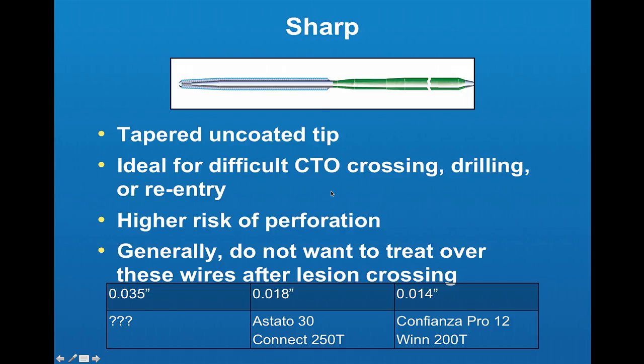Sharp wires are generally tapered with an uncoated tip, ideal for difficult CTO crossing, drilling, and/or reentry. They carry a higher risk of perforation, and generally you do not want to treat over these wires after lesion crossing — as demonstrated when we removed the Fielder XT and switched to another wire. For 0.035, the Terumo glide is an option. For 0.018, the Astato 30 and Connect 250T. For 0.014, the Confianzo Pro or WIND 200T.